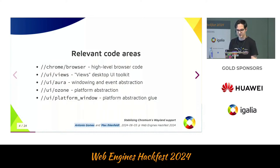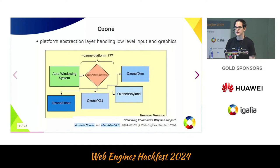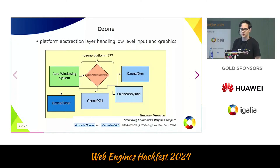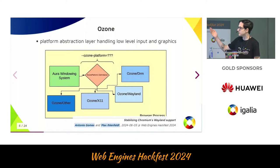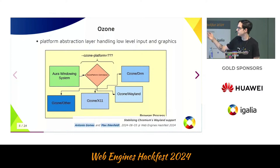Let's take a closer look at Ozone. This is a very simple architecture diagram. We have Aura on the top left calling into Ozone to do all the low-level input and graphics handling. The nice thing about Ozone is that you can compile in support for different platforms and then select the platform you want at runtime, for example via the Ozone platform command line argument. Ozone is also very nice for downstream, because in theory you just need to implement the public interface that Ozone exposes to Aura for your custom platform, and you've brought up a new platform that Chromium can run on, as long as it's Linux-based.